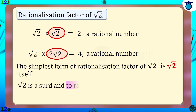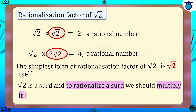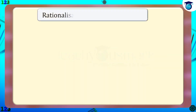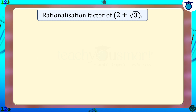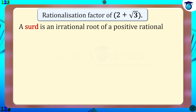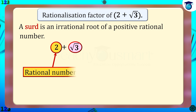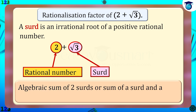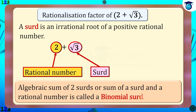Now let's see the rationalization factor of 2 plus √3. We know that a surd is an irrational root of a positive rational number. In 2 plus √3 there are two terms: the first is 2, which is a rational number, and the second is √3, which is a surd. The algebraic sum of two surds, or the sum of a surd and a rational number, is called a binomial surd. So 2 plus √3 is a binomial surd.